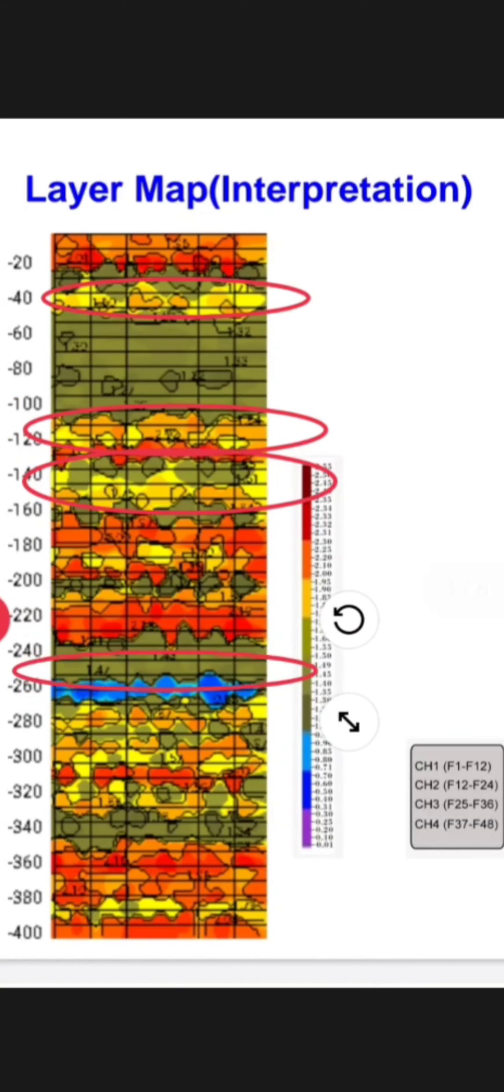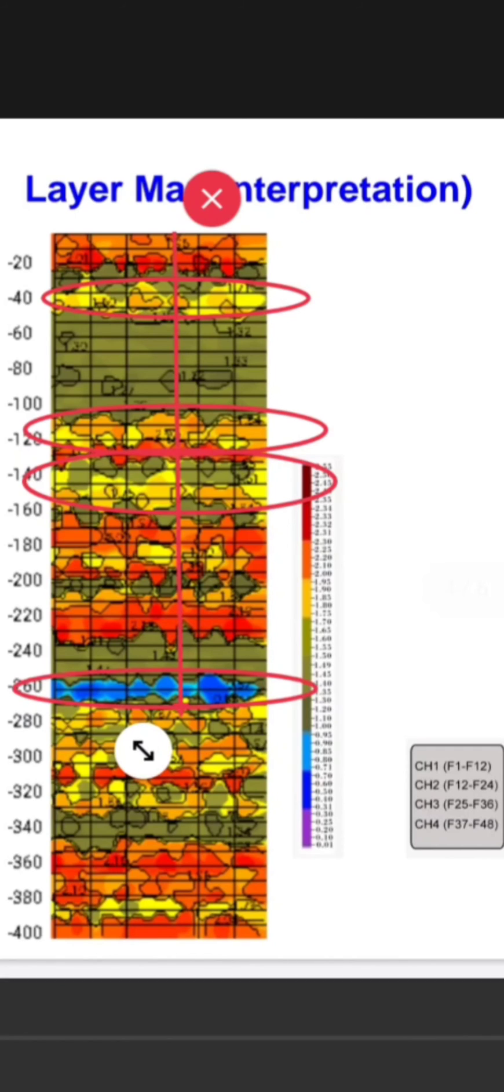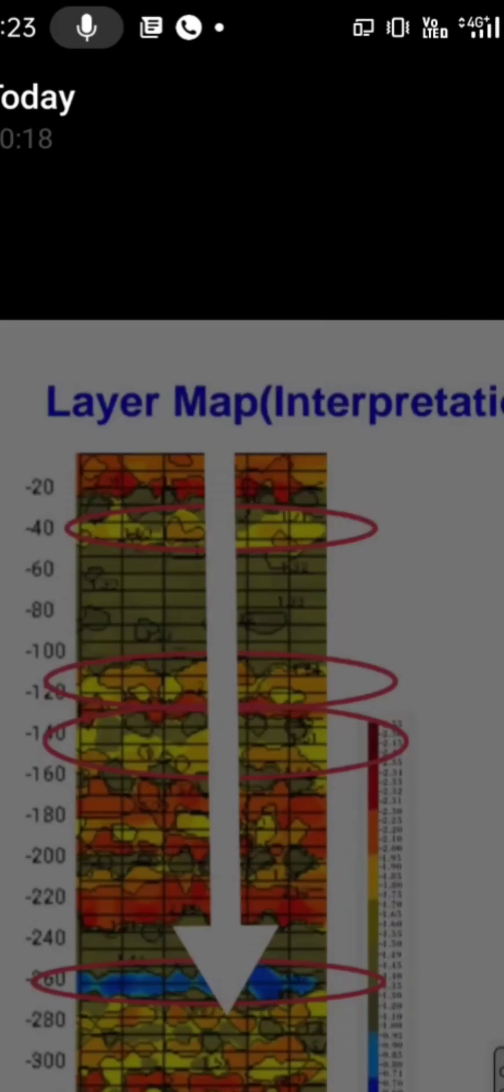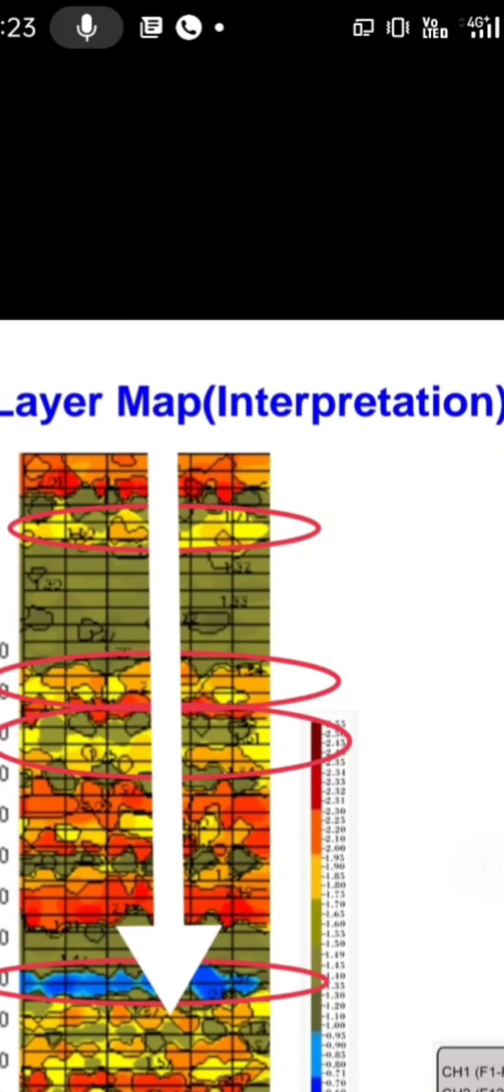The arrow mark is representing that we are going to drill in the straight path. At 40 meters, 120 meters, 140 meters, and at 260 meters we can see the fault zone can be reached. So as per the layer map interpretation, the fault zones are located at these depths.